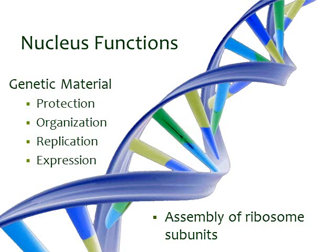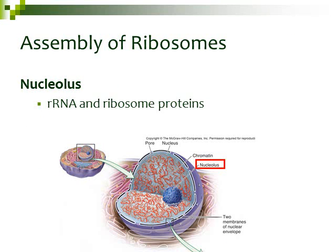In addition to those functions, we also have the assembly of ribosome subunits. Ribosomes are responsible for protein synthesis, but the subunits are created in the nucleus. These ribosome subunits are specifically created in the nucleolus, that region inside of the nucleus. This is where ribosomal RNA is created. The nucleolus also creates the ribosome subunits, and the rRNA and those ribosome subunits are put together to make the whole ribosome.